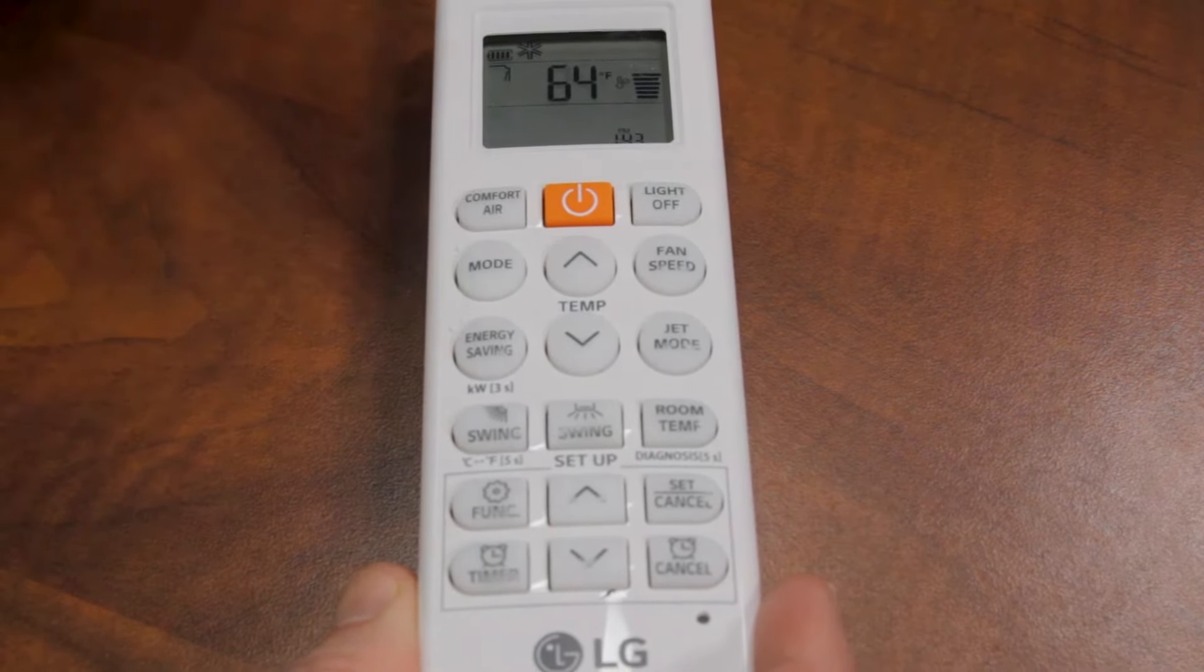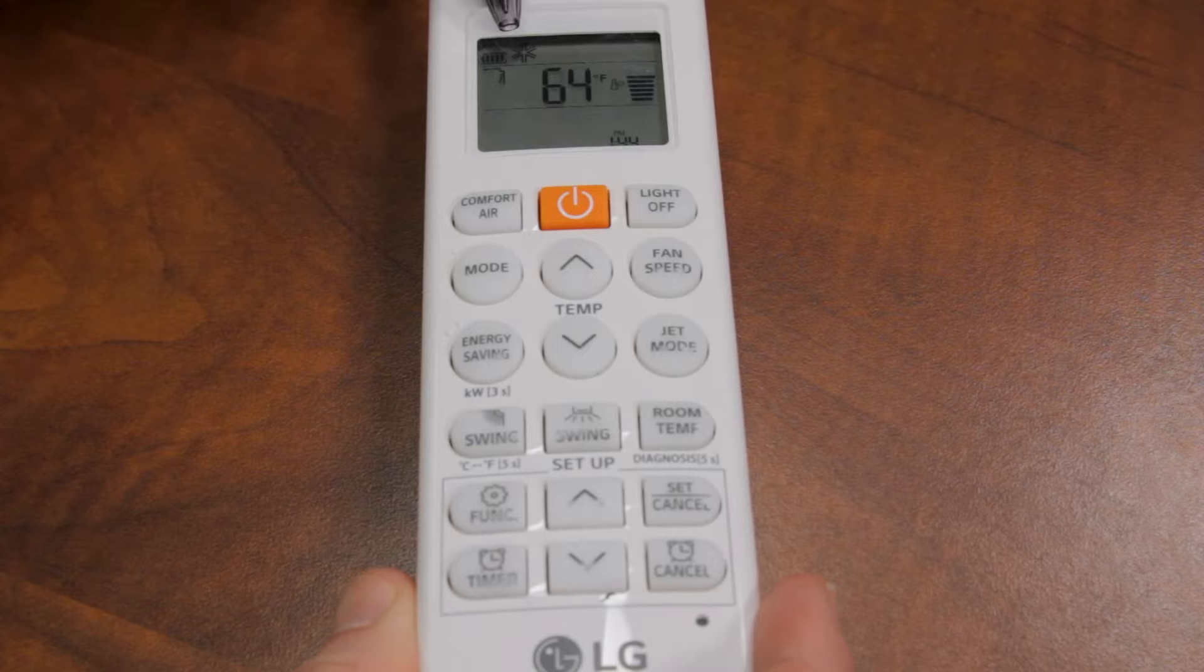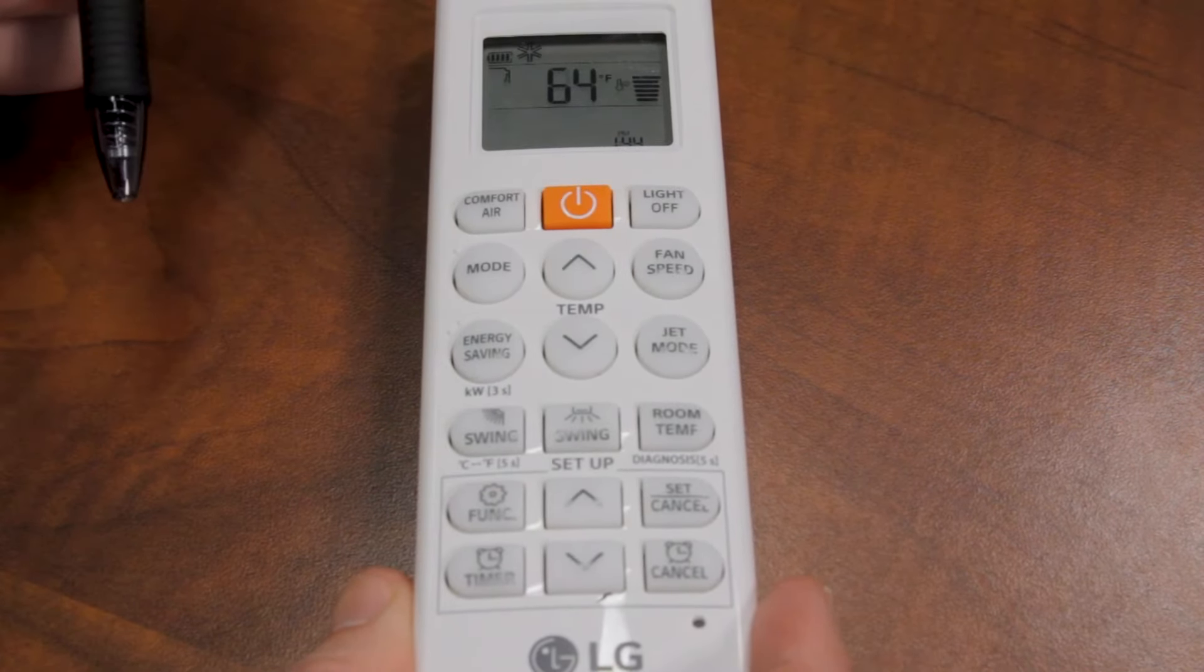Now we'll go over the modes. The modes are listed horizontally at the top of the remote. The first one is cooling mode. It looks like a snowflake. That is your regular air conditioning.